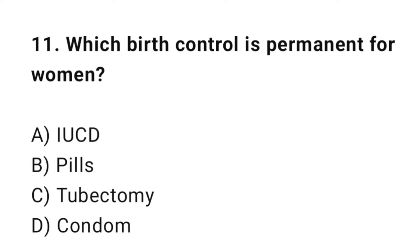Question number eleven: which birth control is permanent for women? The right answer is C — tubectomy. Tubectomy is female sterilization.